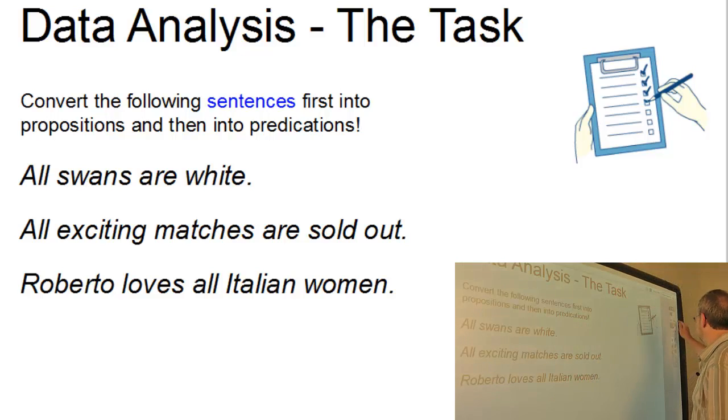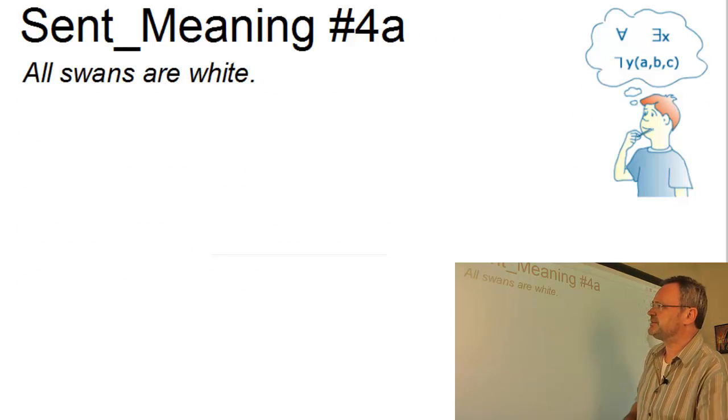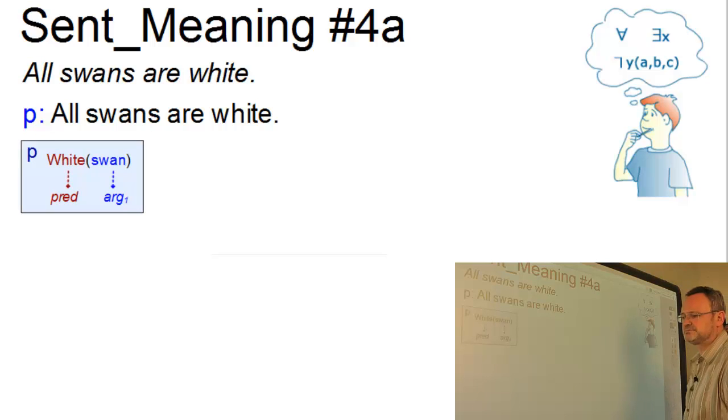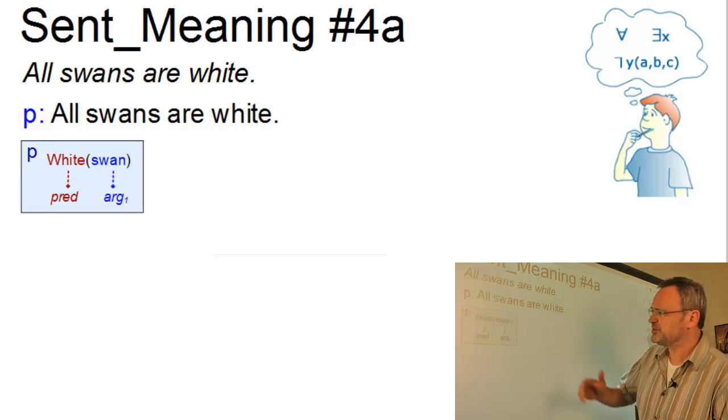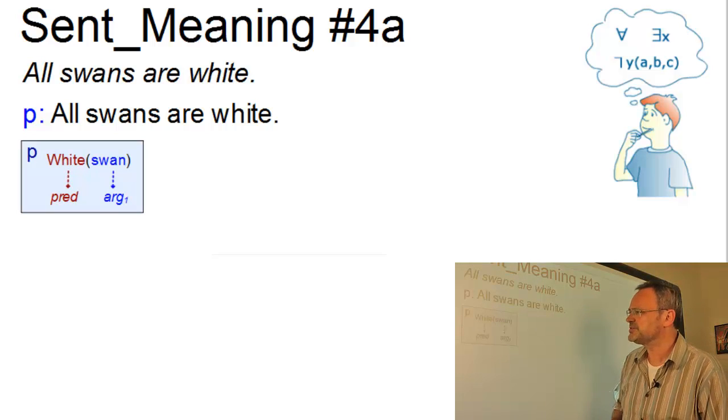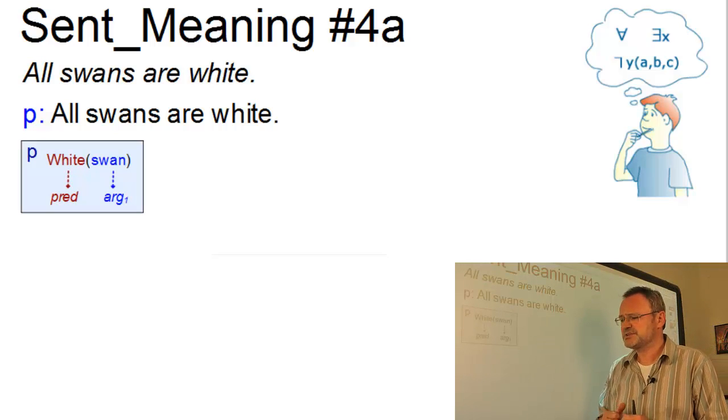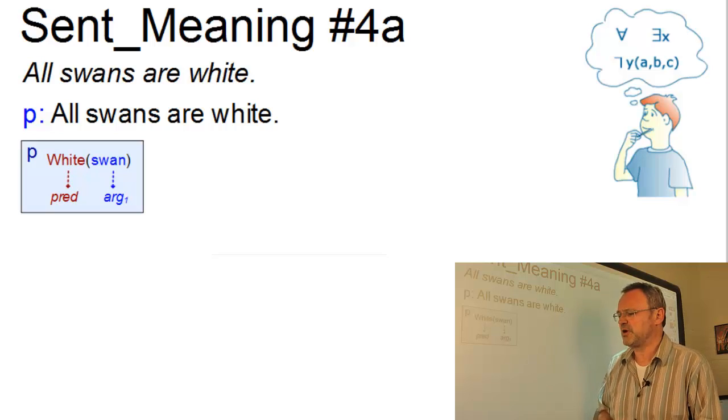Okay, let's start. All swans are white. Now this sentence constitutes a very simple proposition, namely all swans are white. And as a predication, it involves a simple one place predicate which assigns the attribute white to its argument swan. The central question, however, is how do we integrate the amount all into our predication?